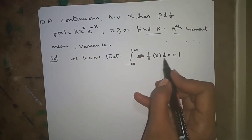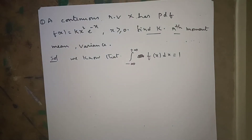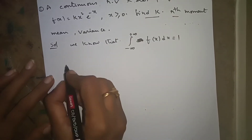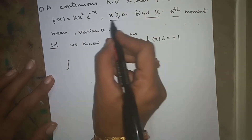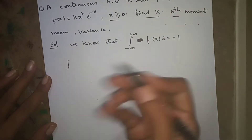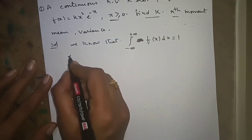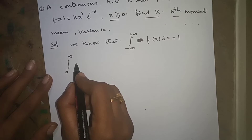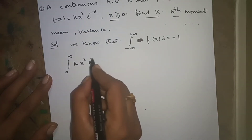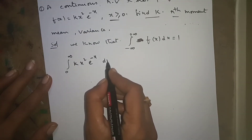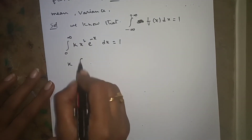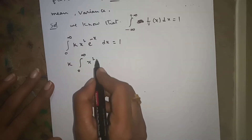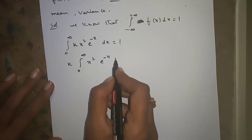By the property of PDF we know the integral from minus infinity to plus infinity of f(x)dx is equal to 1. Our limits are x ≥ 0, meaning 0 to plus infinity. So the integral from 0 to infinity of k·x²·e^(-x)dx equals 1. We write k outside: k times the integral from 0 to infinity of x²·e^(-x)dx equals 1.